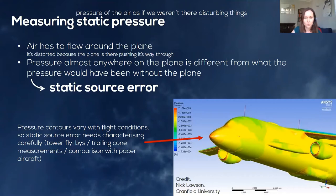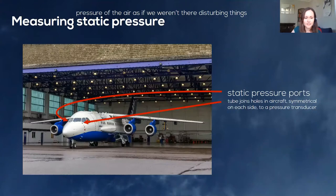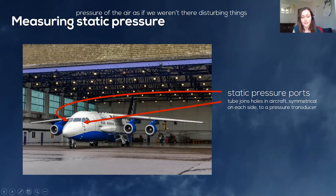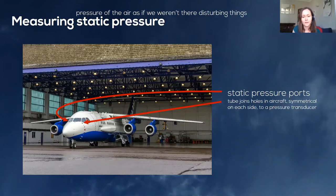Let's look at our aircraft and where the static pressure measurement is made. You can just about see a small port underneath where the pilots sit, one on each side. That's where the static pressure measurement is made — there's a hole in the side of the aircraft and a tube from each of those two symmetrical holes. They join together and feed into a pressure transducer that converts the pressure into a voltage.